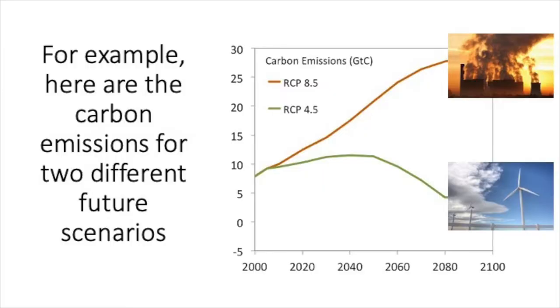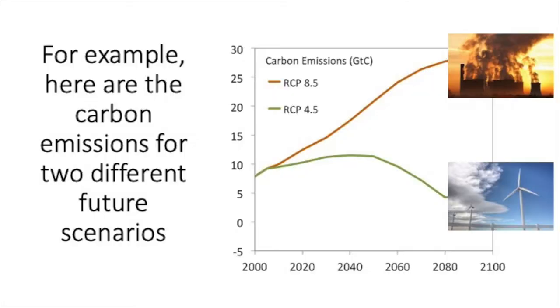Here are carbon emissions consistent with two different scenarios. These scenarios have different populations, different worldviews, different demographic properties, and very different energy sources. The higher one depends more on fossil fuels through the end of the century, though with increasing efficiency and some renewables. The lower scenario transitions to renewables and reduces carbon emissions significantly by the end of the century.